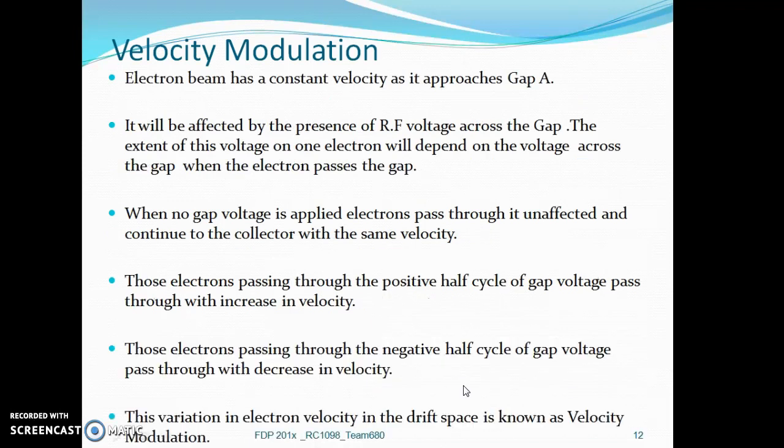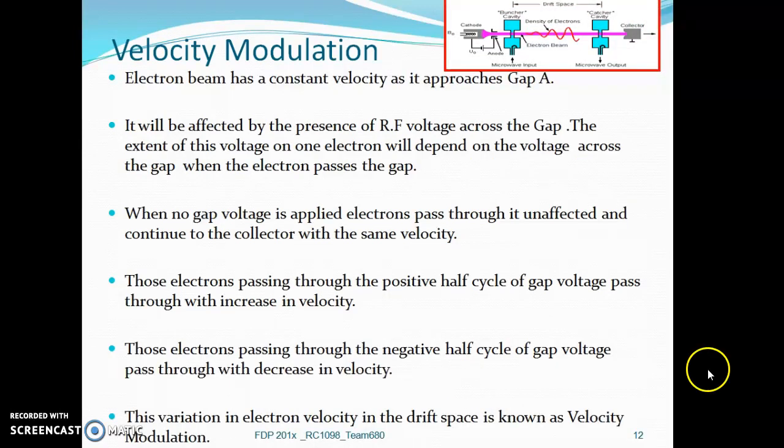Let us understand velocity modulation. Electron beam has a constant velocity when it reaches the gap B. RF signal to be amplified is applied to the buncher cavity. Based on the RF signal, the velocity of the electron beam will vary. When the RF signal voltage is zero or when no gap voltage is applied, the electron beam will move with a constant velocity with no change through the drift space.